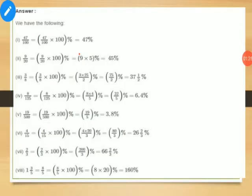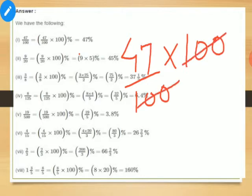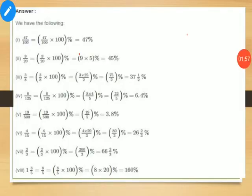Now the first question we are going to discuss is how to convert a fraction into percentage. If 47 upon 100 is given and you have to convert it into percentage, multiply it by 100. This 100 will be cancelled and you will get 47 percent.